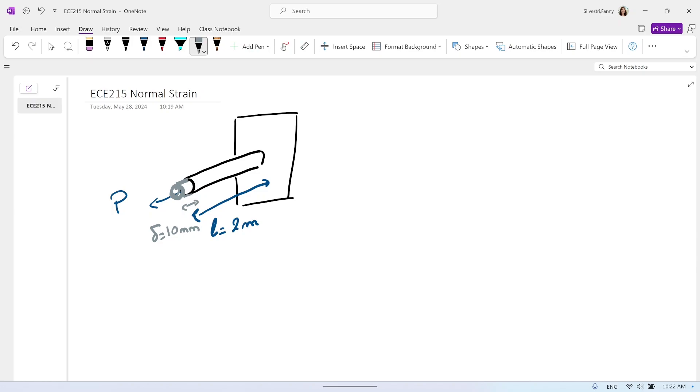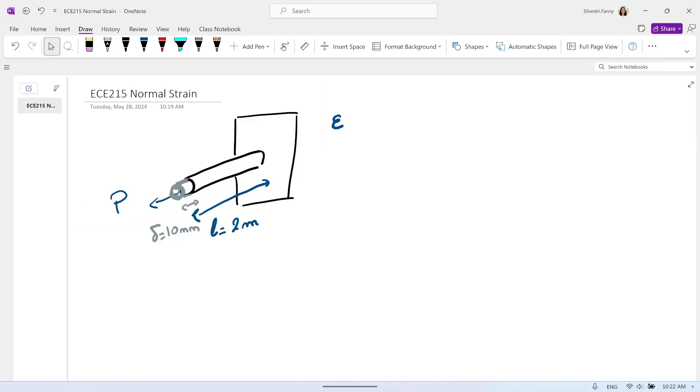But what we call the elongation will be epsilon. Epsilon equal the delta, so the increase in length, divided by the original length. So in this case that will be 10 millimeters equal 0.01, so 0.01 divided by 2. Make sure that you have the same unit.